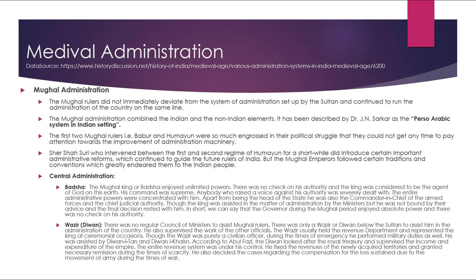Sher Shah Suri, who intervened between the first and second regimes of Humayun for a short while, introduced certain important administrative reforms which continued to guide future rulers of India. The Mughal emperors also followed certain traditions and conventions which greatly endeared them to the Indian people.